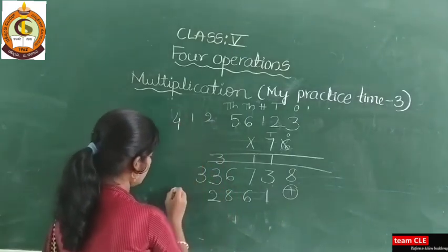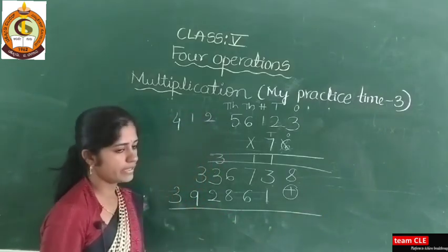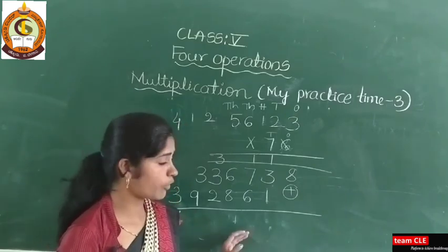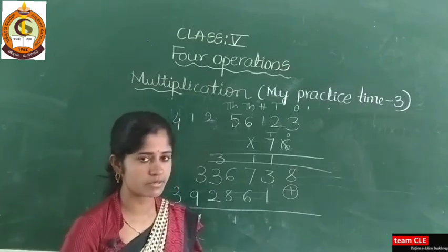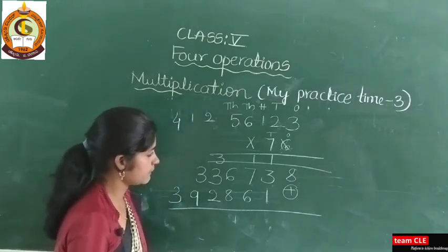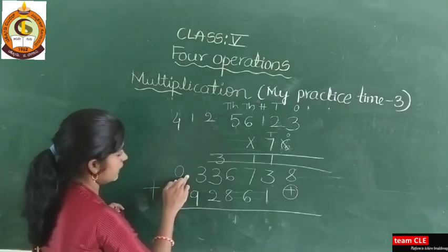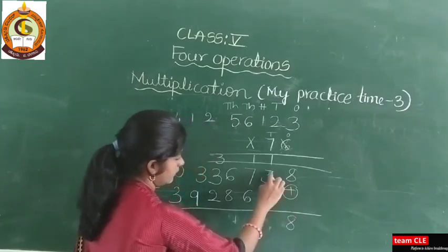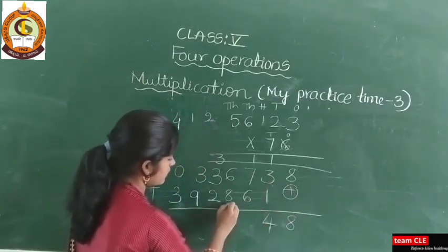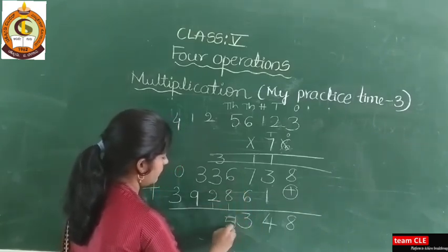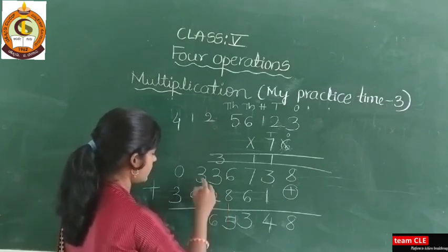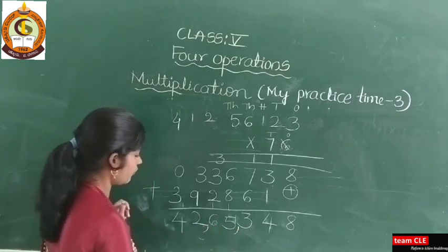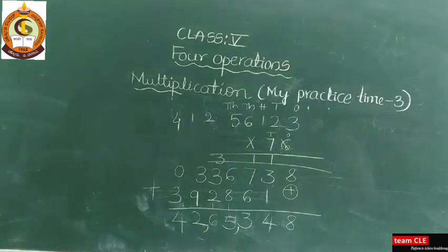It looks a little bit difficult. Try to solve the examples I have shown, then take different examples and practice. For this you need to practice more and more. Now add the numbers: if there is no digit, put zero. Eight plus zero is eight. Three plus one is four. Seven plus six is 13 — carry 1. Six plus eight is 14, plus 1 is 15 — carry 1. Three plus two is five, plus 1 is six. Three plus nine is 12, and three plus one is four. The answer is forty-two lakhs sixty-five thousand three hundred and forty-eight.